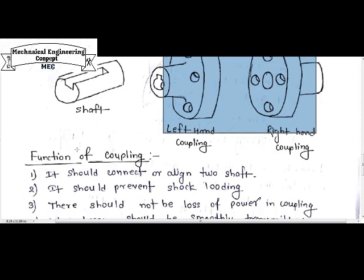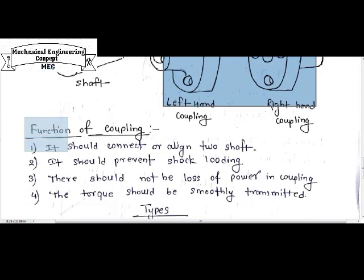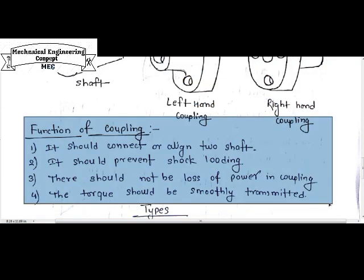Now we need to discuss the basic function of coupling. The coupling element should connect or align two shafts. The first major function of coupling is it should connect two shafts and align them in axis and rotation, so the input shaft can transmit power with coupling help to the output shaft.